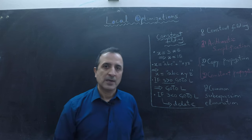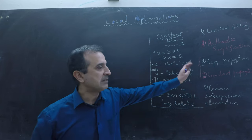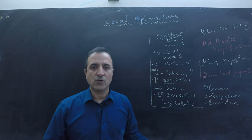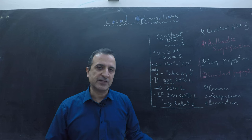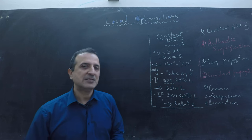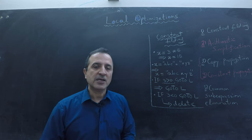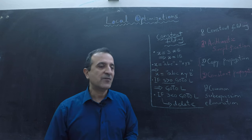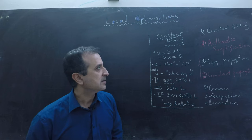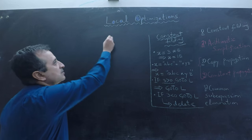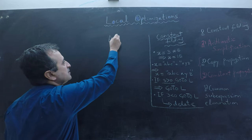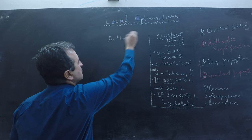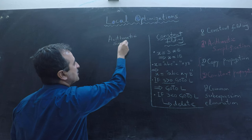Now let's learn about arithmetic simplification. If I have a line of code that has an equation and that equation can be simplified, then instead of waiting to simplify that equation at runtime, we simplify that equation at compile time. Let's do some examples of arithmetic simplification optimization.